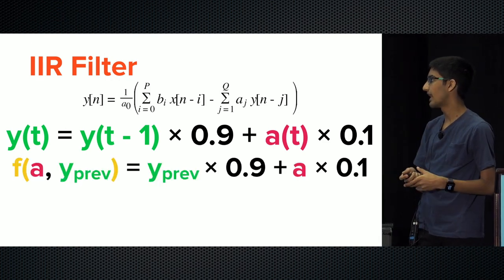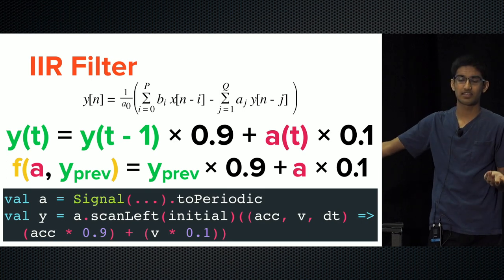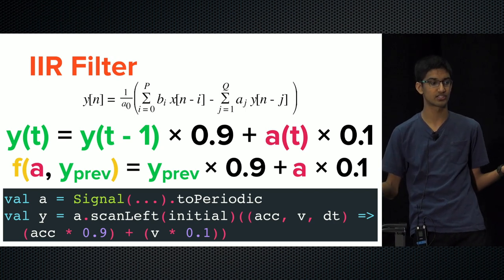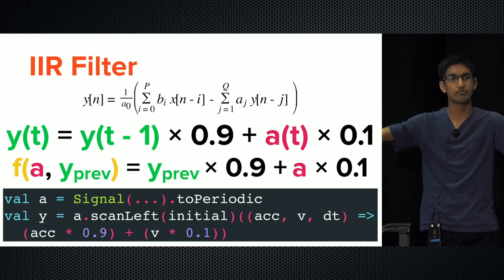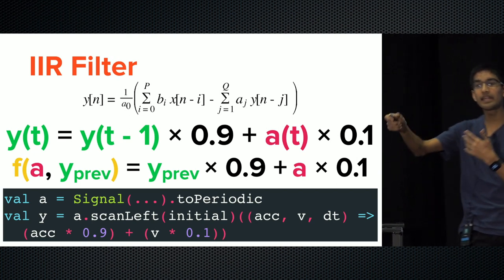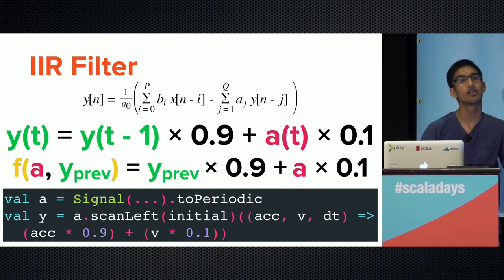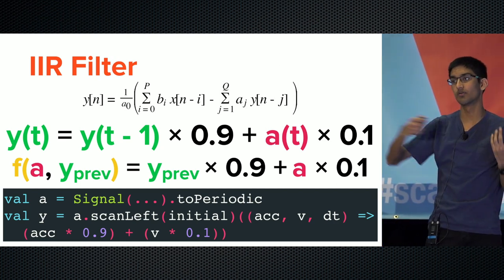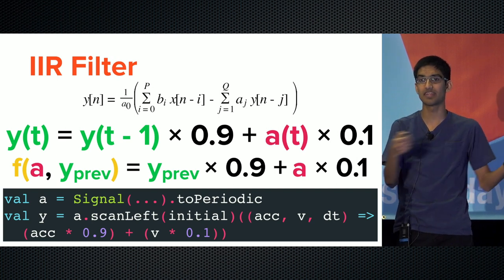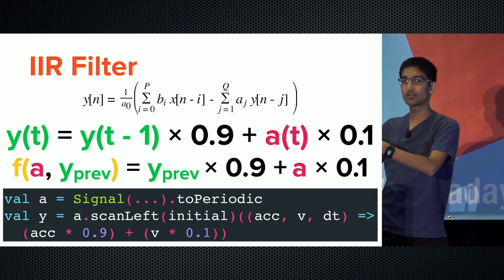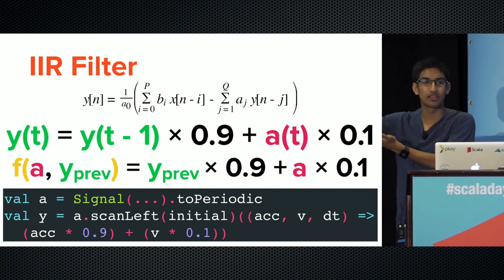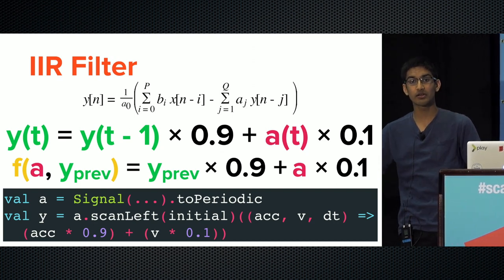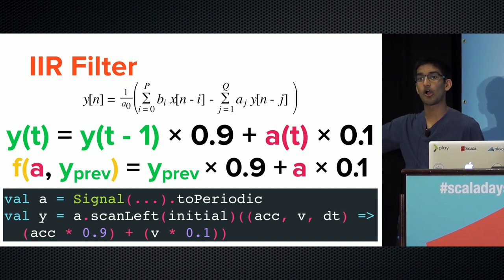A second scan example is an IIR (Infinite Impulse Response) filter. Unlike FIR, once you have a spike in your input stream, it will always affect future outputs because it depends on both the latest input and previously output values: y(t) = 0.9 * y(t-1) + 0.1 * a(t). A spike gets filtered down but carries on forever. In code it's just a scanLeft with that function — a full IIR filter in two lines. By combining these patterns — IIR filter, map, proportional control — you can build complex systems from a potentiometer through to a motor output.